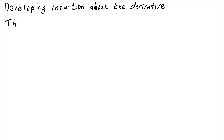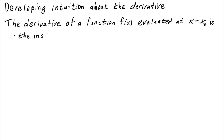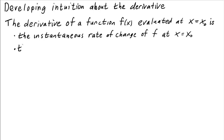The derivative of a function f evaluated at x equals x0 is the instantaneous rate of change of the function at x equals x0. Or we could also call it the slope of the tangent line of the graph of f at x equals x0.